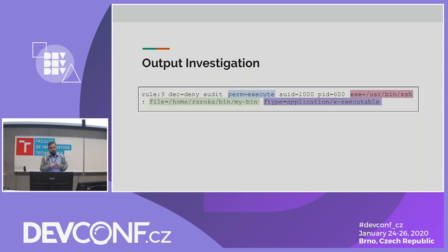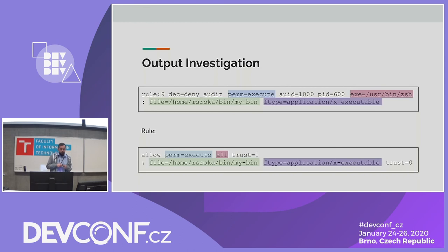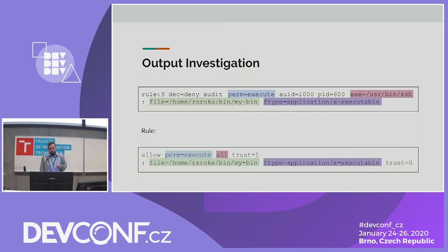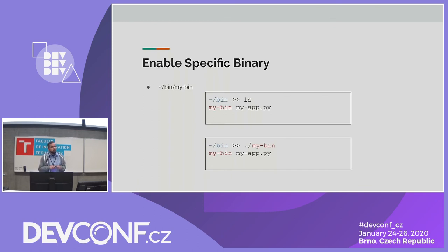So we need to create a rule that will allow such an event. We allow an event that has execute permission, and we can specify the subject as my shell, or use the 'all' keyword so it works with any shell. The important thing is that the subject has to be trusted — meaning it comes from the RPM database, is properly installed, and is not some third-party script. We specify the object as my binary with its file type. After adding this rule, we are now able to run this binary in the home directory.